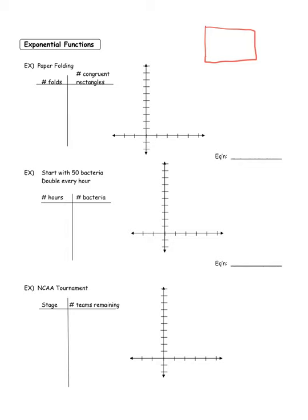How many congruent rectangles do you see? There's just one. If you don't fold the paper at all — zero folds — you see just one rectangle. But if you fold it in half so there's a crease through the middle, how many congruent rectangles will you see? One and two — so one fold creates two congruent rectangles. Now fold it again for a second fold, and how many congruent rectangles do you see? Two folds gives us four congruent rectangles.